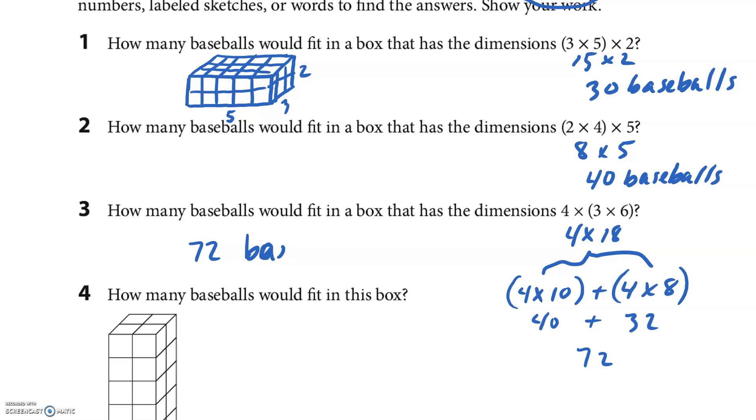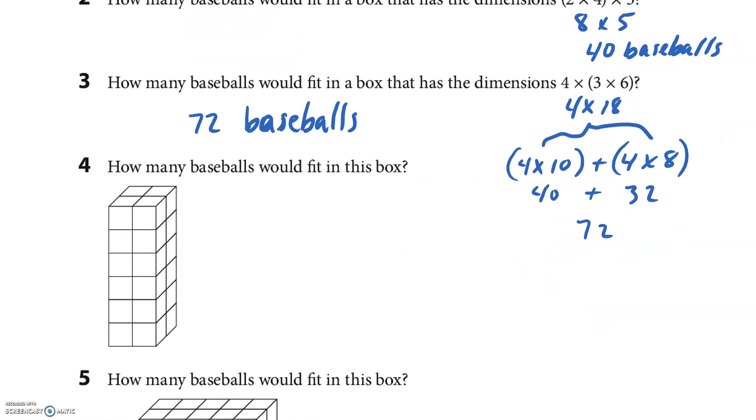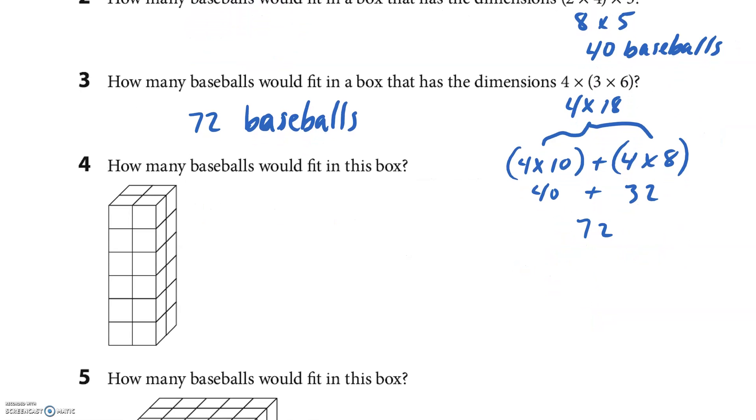Now they want us to find how many fit in this box, so we just have to find the dimensions. It looks like there's two here and then there's two here, and going up there's 1, 2, 3, 4, 5, 6. So there's 6 going up for the height. It's 2 times 2 times 6. I'll call that the base, 4 times 6, and then that would be 24 baseballs.